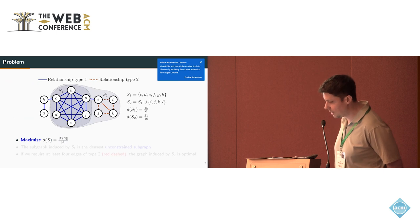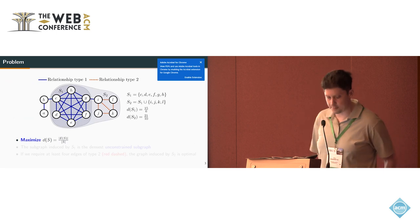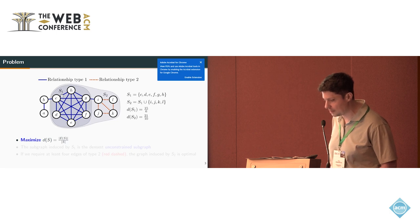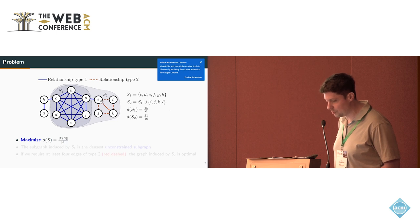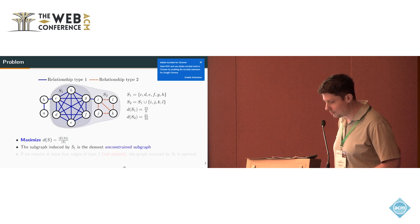Take a look at this example. Now we have a graph here where we have different relationship types which are shown as different colors on the edges. We have relationship type 1 with these blue edges and relationship type 2 with these red dashed edges. If we just consider the unconstrained densest subgraph problem, then the optimal solution would be this set S1, or this clique here. This is the densest unconstrained subgraph.